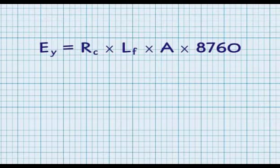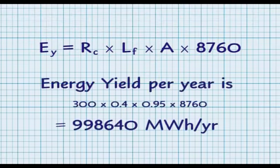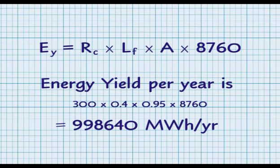If we put this into an example, we have a wind farm with a rated capacity of 300 megawatts, a load factor of 0.4, and an availability of 0.95. These are typical values for offshore wind farms. When you put this into the equation, we come out with a figure of 998,640 megawatt hours per year.